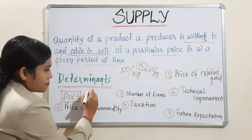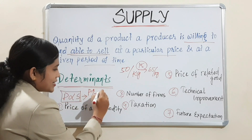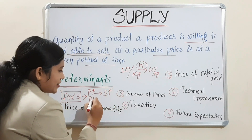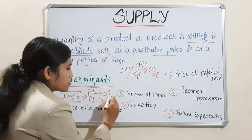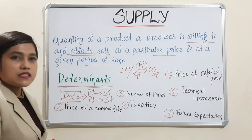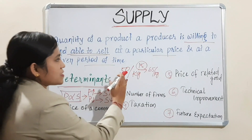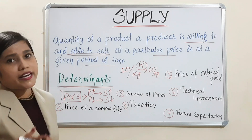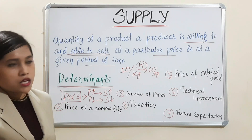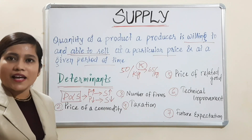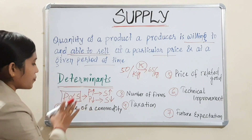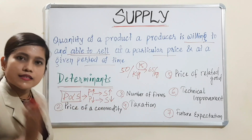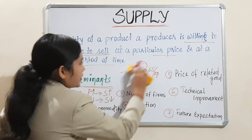Price has a direct relationship with supply. When price increases, supply will increase. When price decreases, our supply will also decrease. Because if price has been decreased from 50 to 40, with the same cost we will get less money, so we will lessen our supply. Price has a direct relationship with supply.